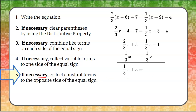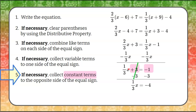Step five: if necessary, collect constant terms to the opposite side of the equal sign. Our constant terms are positive three and negative one. Because the variable term is on the left, we collect constants to the right. The opposite of positive three is negative three, so we subtract three from each side. One-third x remains on the left, and negative one minus three gives negative four on the right.